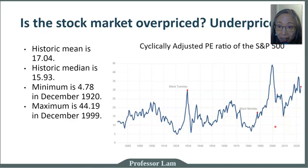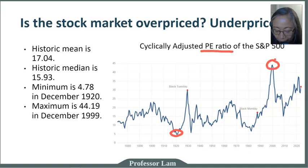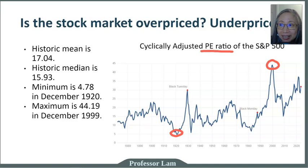Here is some actual data. Is the stock market overpriced or underpriced? This chart shows the historic PE ratio. The historic mean is 17.04 and the historic median is 15.93. The minimum was somewhere in the 1920s — the first major stock market crash. The highest point so far was in 1999, just before the dot-com boom in 2000. The answer is that it's very difficult to tell, and the market can remain out of equilibrium for a long time.